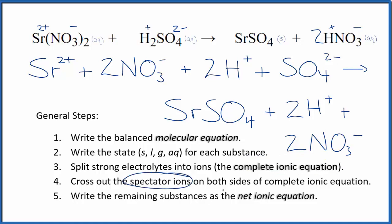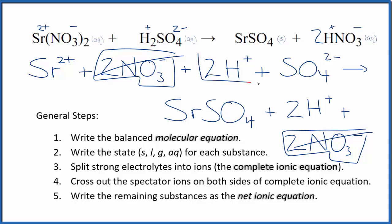Now we can cross out the spectator ions—they're on both sides of the complete ionic equation. In the reactants, I see there are 2 nitrate ions. We also have those in the products. These are spectator ions, which we can cross out. We have 2 hydrogen ions in the reactants and in the products. Let's cross those spectator ions out.